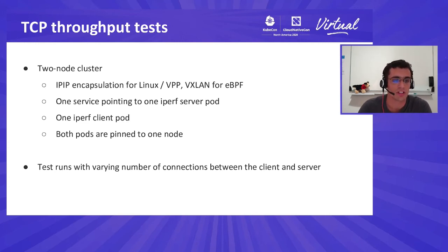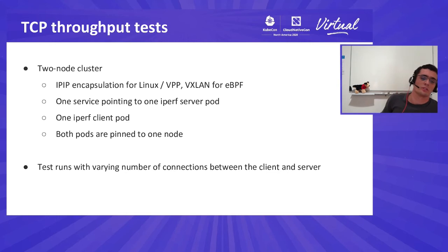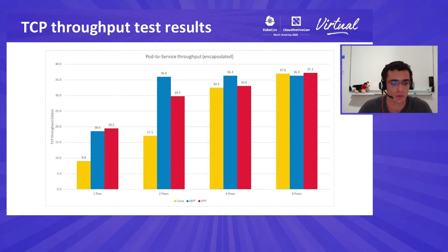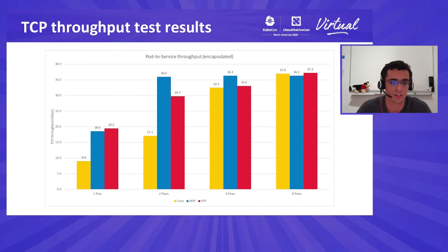We also ran TCP throughput tests on a two-node cluster with encapsulation between nodes. We have one cluster IP service pointing to an iPerf server pod and one iPerf client pod, both pinned to different nodes, testing throughput with varying numbers of connections. With one flow, eBPF and VPP are twice as fast as Linux — at almost 20 gigabits per second, while Linux is at 9. With two flows, eBPF takes the lead at 36 Gbps, VPP at 30, and Linux at 17. With four and eight flows, all data planes catch up and eventually saturate the link.